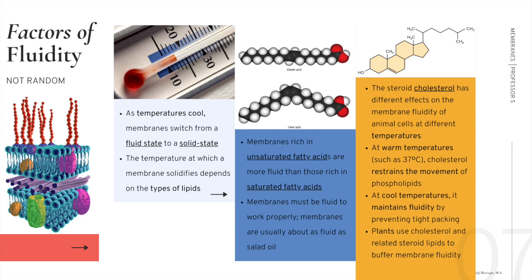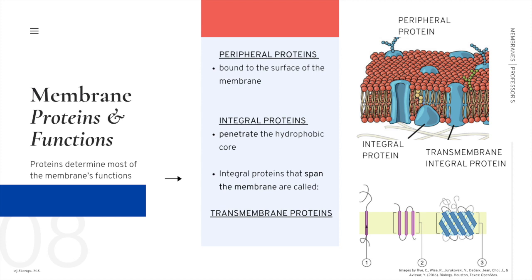Membranes must be fluid to work properly. The last factor affecting fluidity is the steroid cholesterol, which has different effects on animal cell membranes at different temperatures. At warm temperatures such as 37°C — body temperature — cholesterol actually restrains movement of phospholipids. At cooler temperatures, it has the opposite effect, maintaining fluidity by preventing tight packing of the phospholipids. Plant cells use a different system; although cholesterol is present in plant cells, they use a different set of related steroid lipids to buffer their membrane fluidity.